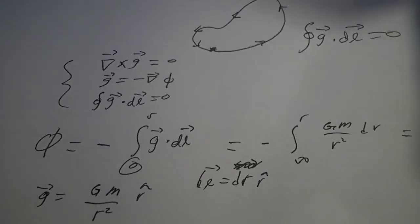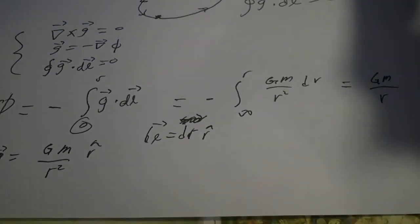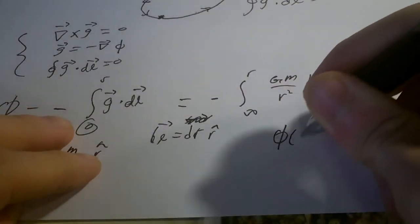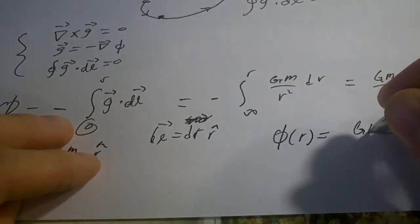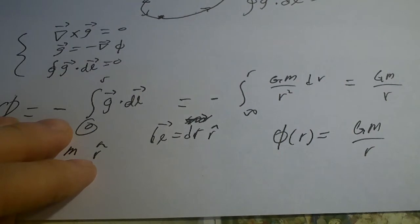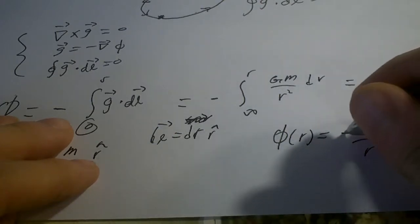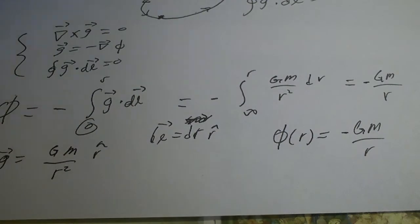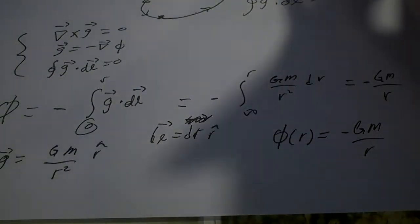So now, phi of r equals minus Gm/r. So as a summary: for a point mass, phi equals minus Gm/r.